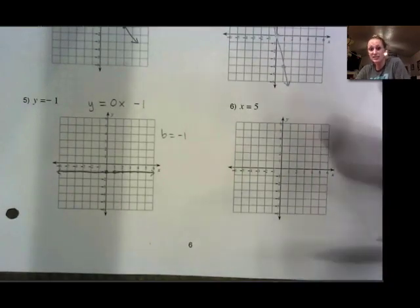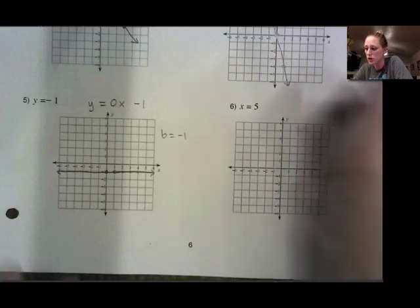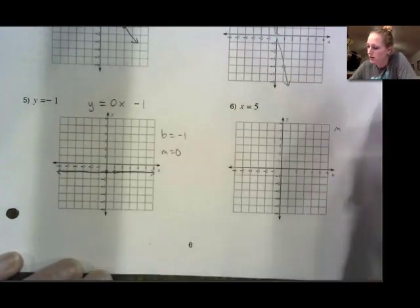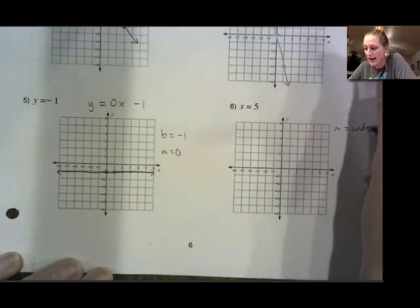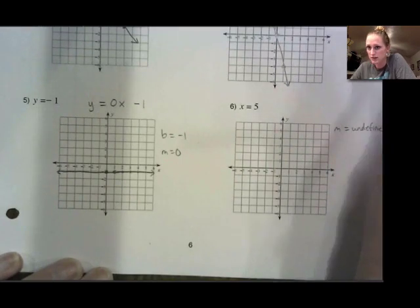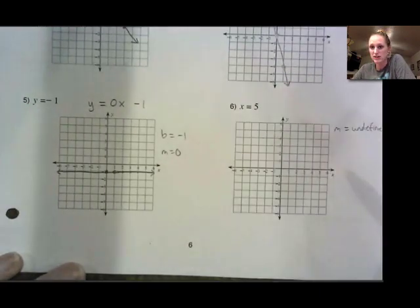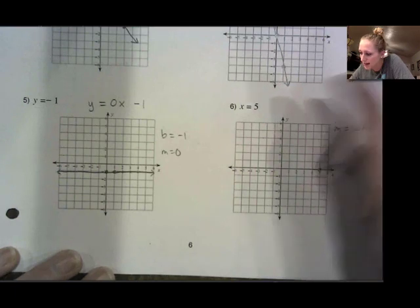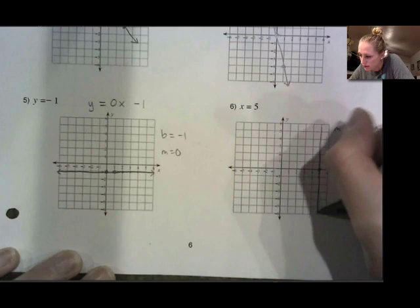X equals a number is the only time where we have x equals instead of y equals. This is for the unique situation where our slope is undefined and we don't have a y-intercept. When it's x equals a number, it's going to cross that number on the x-axis. So at 5, I'm going to put a point and then it's going to be a vertical line through that value.